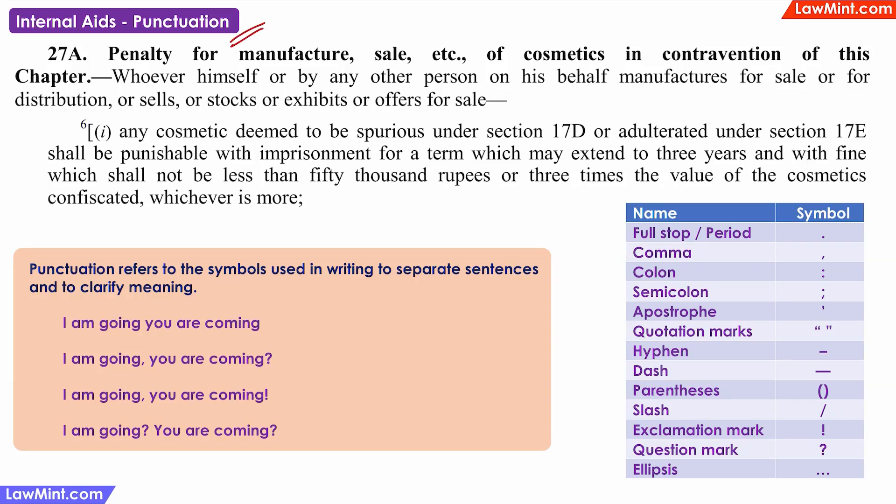Punctuation marks are the symbols used to separate sentences or parts of a sentence and also to convey the intent of the author. Full stop, comma, colon, semicolon, question mark — these are some of the punctuation marks used in the English language.